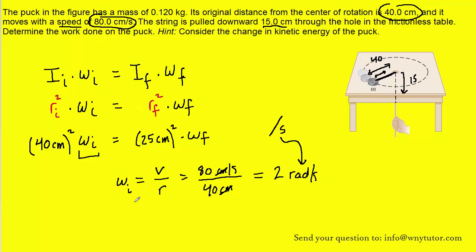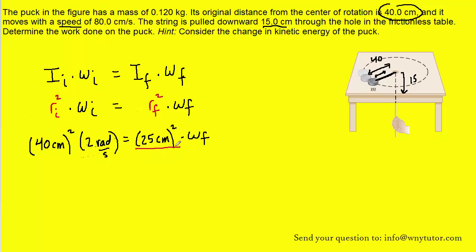So that would represent the initial angular speed, and we can plug that in to the formula. So as we can see, we can solve for the final angular speed, and to do that all we need to do is divide both sides of the equation by 25 centimeters squared. Make sure it's squared. And also make sure that when you perform the calculation you square the 40 and square the 25. The centimeters are going to cancel. And you should get 5.12 radians per second for the final angular speed.